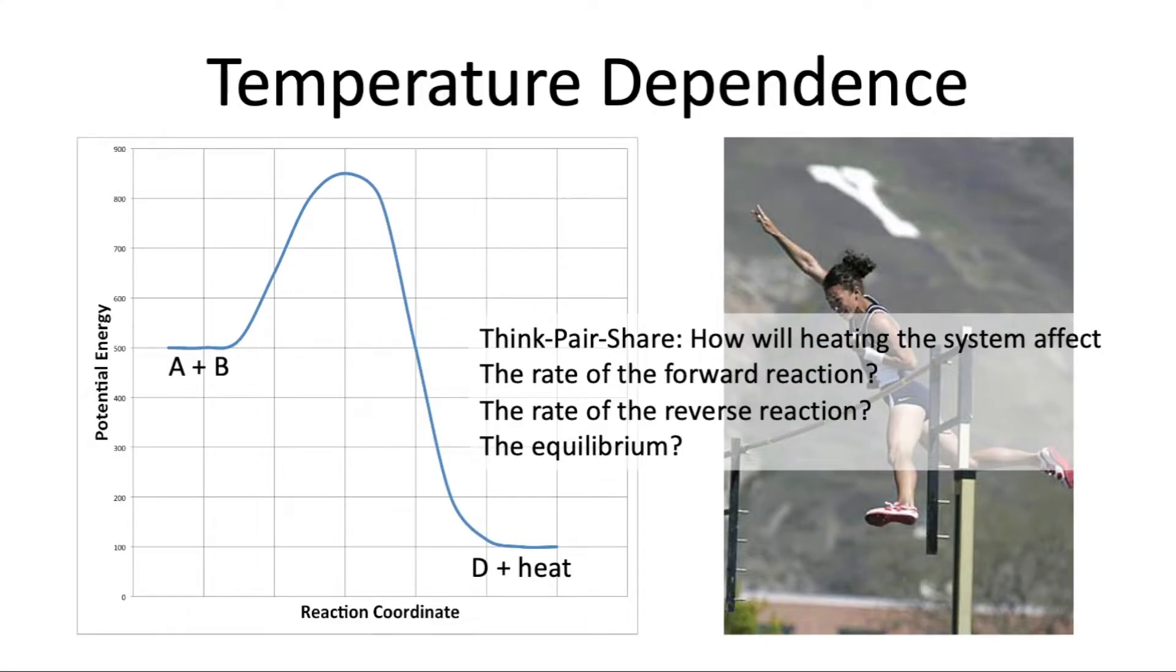So as we heat the system the rate of the forward reaction and the rate of the reverse reaction will both increase. But because we're starting out with such a small amount of molecules going over that reverse activation barrier it's actually going to affect the rate of the reverse reaction more than the rate of the forward reaction. And because of that our equilibrium will actually shift to the left and equilibrium constants will actually change in this situation.